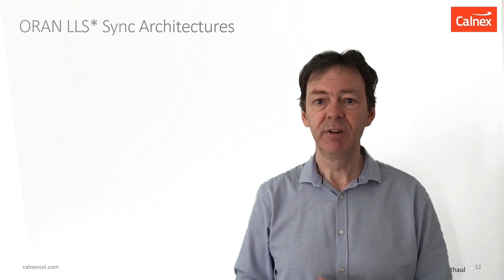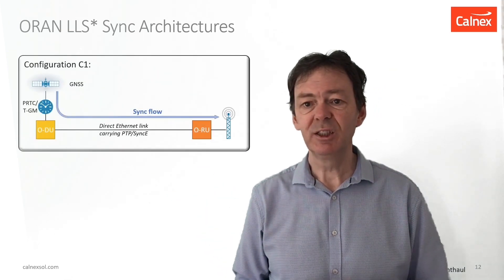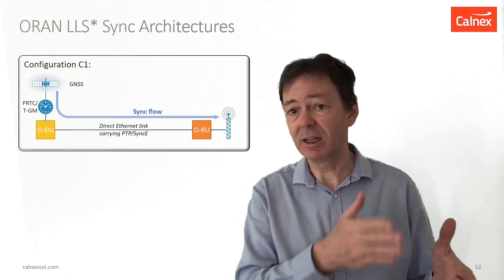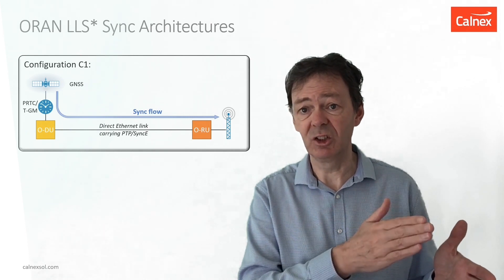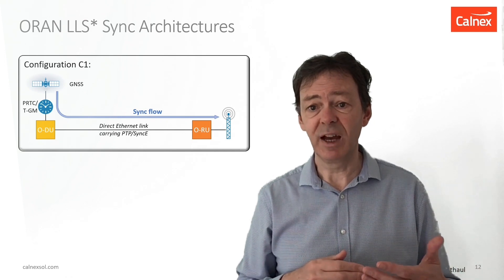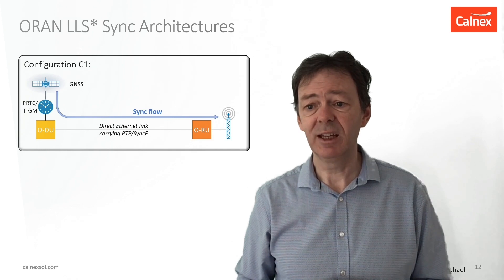The ORAN Alliance has come up with four different architectures for distributing sync within a fronthaul network — they call it LLS, lower layer split, but for us it effectively means fronthaul. Firstly, there's configuration C1. This is where the DU has a synchronisation reference connected to it — it might be connected via a synchronisation network, or it might be directly connected — and then the timing from that DU is passed to the RU through a direct Ethernet connection.